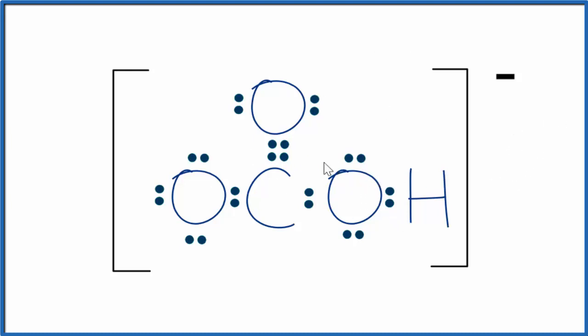When we look at our Lewis structure, we have a double bond here and a single bond here. We could have the double bond here and the single bond here and it would be really the same structure.